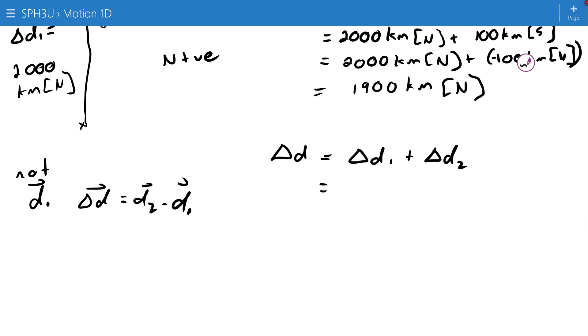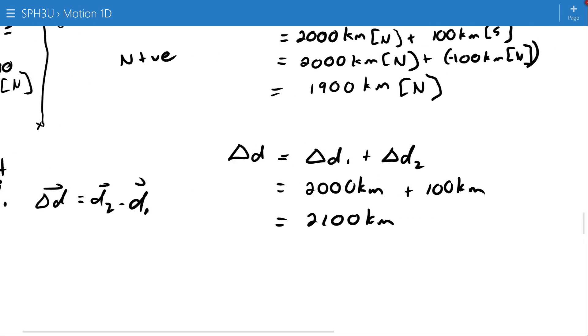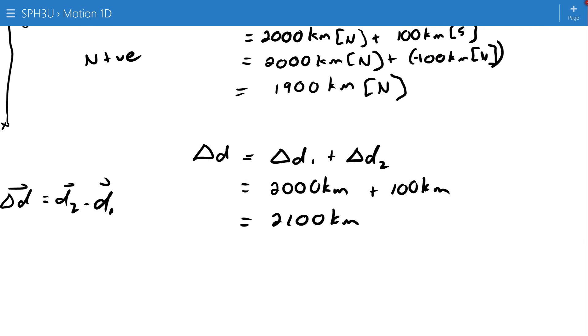Alternatively, with my distance, I'm ignoring those directions, so I got 2,000 kilometers plus 100 kilometers for a total of 2,100 kilometers. Didn't make the south negative, and as a result, the number worked out bigger.